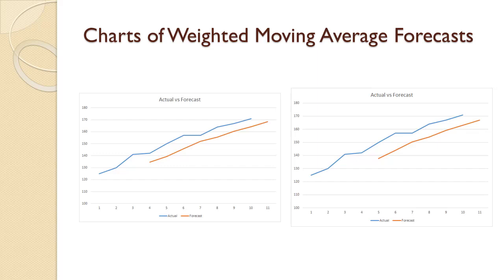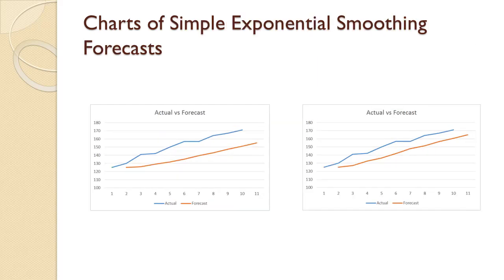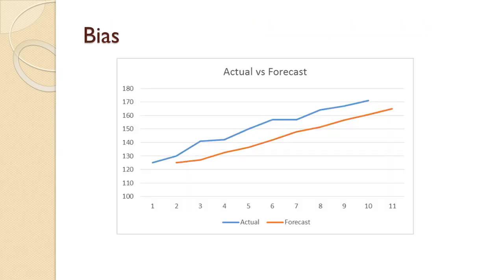Do you see the problem now? Let's look at one more set of forecast charts. This slide shows the two forecasts we produced in a prior video using simple exponential smoothing. The one on the left uses an alpha value of 0.20. The one on the right uses an alpha value of 0.40. Have you figured it out? For every single period in which we have a forecast, the forecast is below actual demand.